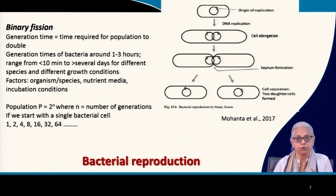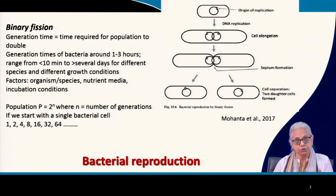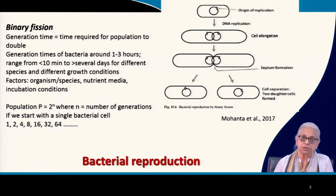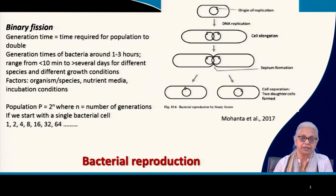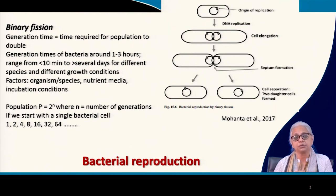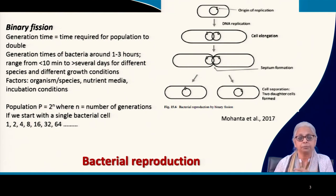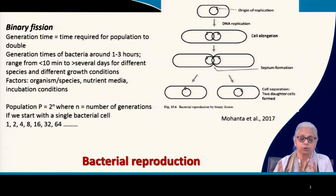Second is the nature of the nutrient media. Rich media — high in nutrient concentration — will cause faster reproduction. If the nutrient concentration is low, they will reproduce at a slower rate. Third is incubation conditions: pH, temperature, and pressure all determine the growth rate of the organism you are cultivating.